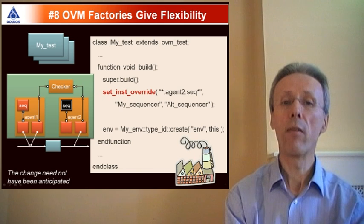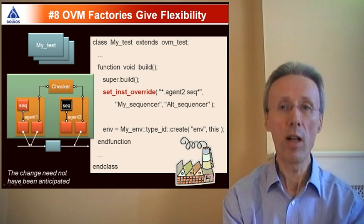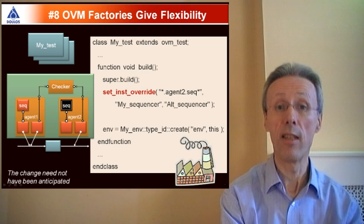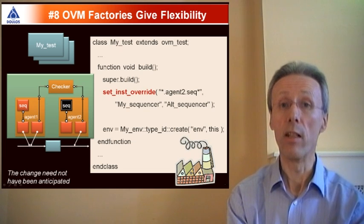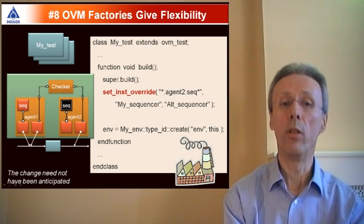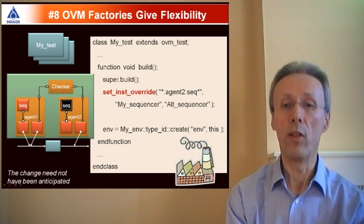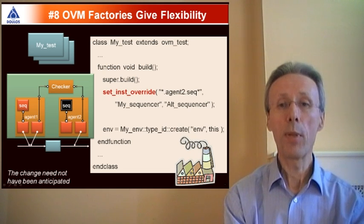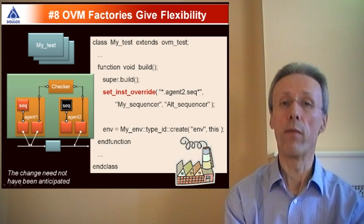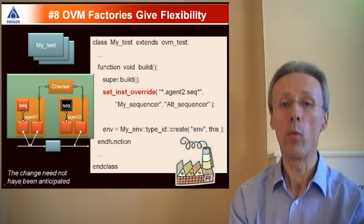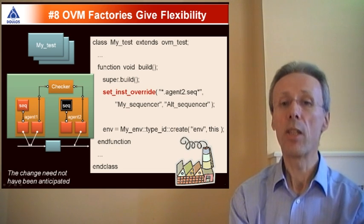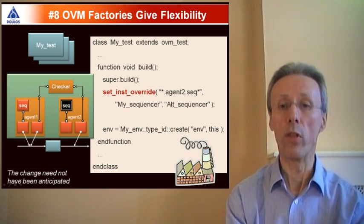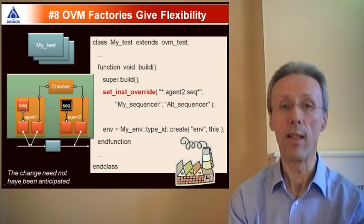The neat thing about factories is that you can override the choice of components instantiated within the factory, outside of the component that's actually doing the instantiation. So in this example, our agents by default instantiate a sequencer named MySequencer. But this particular test is calling the setinstoverride method to change the choice of sequencer instantiated within the agent. So for a particular agent, instead of instantiating MySequencer, AltSequencer is instantiated instead.